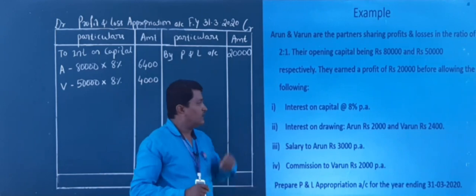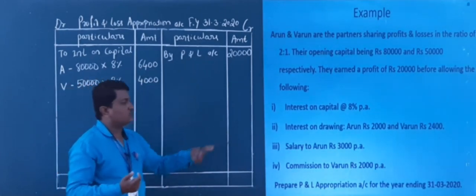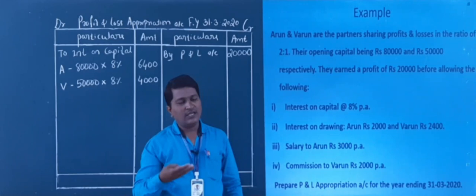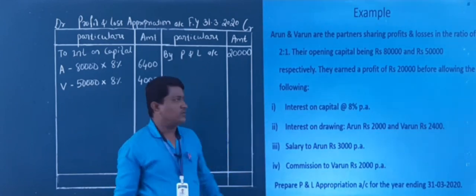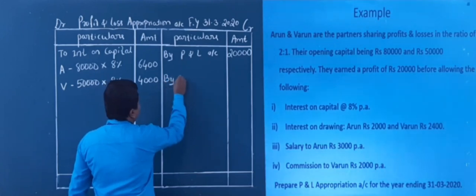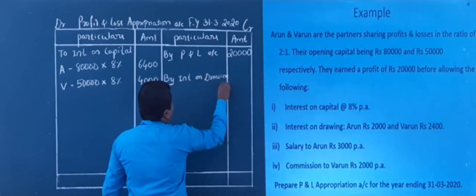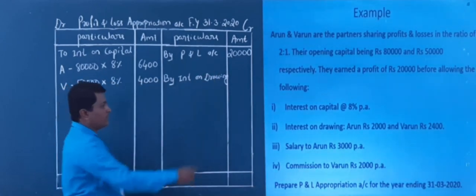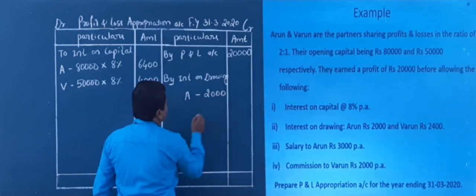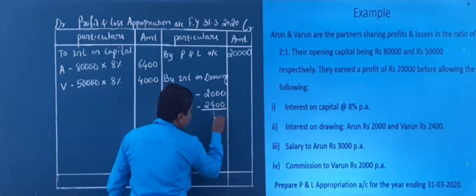Interest on drawings comes directly as a given amount — it is income to the firm. So I write interest on drawings on the credit side: Arun 2,000 and Varun 2,400. You add these in the outer column: 2,000 plus 2,400 equals 4,400.